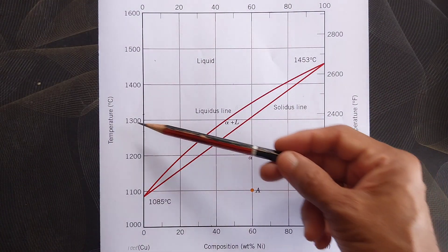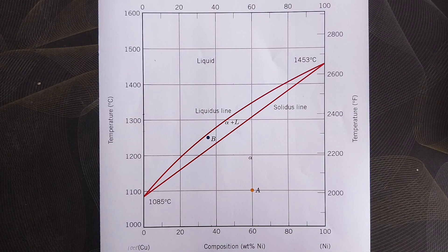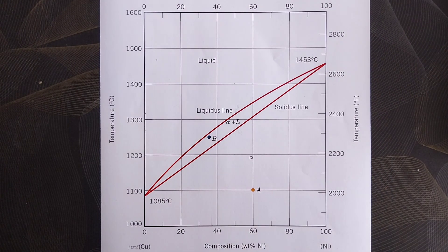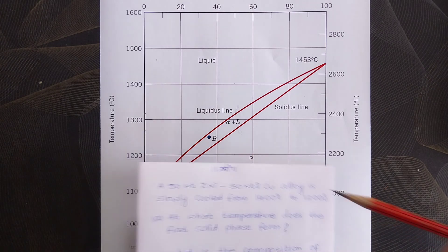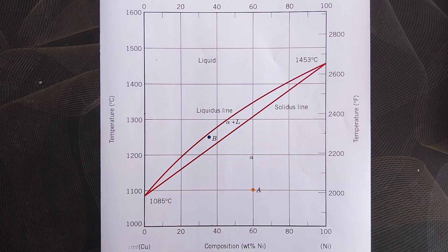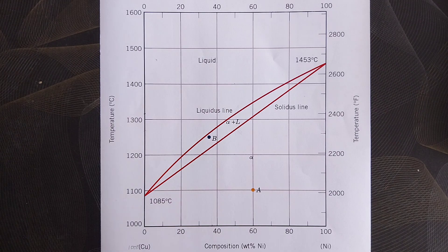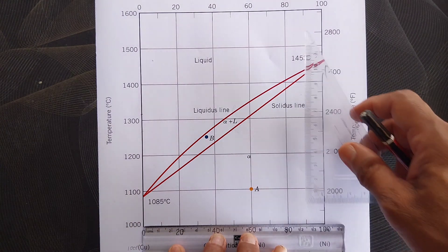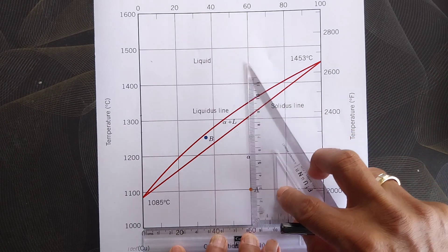This is the phase diagram with temperature in degrees Celsius on the y-axis and composition expressed in weight percent nickel on the x-axis. The numbers 0, 20, 40, 60, 80, and 100 refer to the amount of nickel. To find the amount of copper, subtract these numbers from 100. So here we have 100 percent copper on one side and 100 percent nickel on the other. The composition mentioned is 50 weight percent nickel and 50 weight percent copper — that is this point here at 50 — and we can draw a composition line perpendicular to the x-axis.